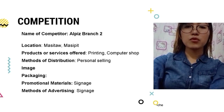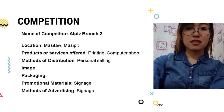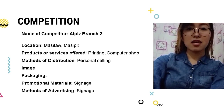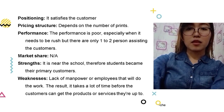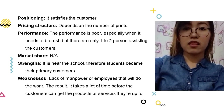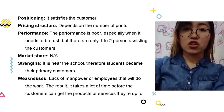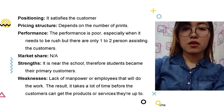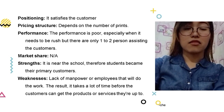Competition: our main competitor is the Alpis branch, also located at Masipit, Calapan City. They offer computer shop services with in-store service distribution. They don't have packaging or advertisements, but use signage to promote their shop. Their pricing depends on the type of service and number of prints. Their weakness is the lack of staff to facilitate work and assist clients. Their strength is being near the school, making it convenient for customers. Their weakness is insufficient employees to assist clients and handle tasks.